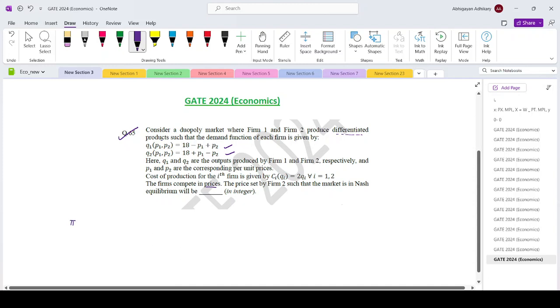So first let us write down the profit expressions. Pi 1 is P1Q1 minus C1, so P1 into Q1. So Q1 is 18 minus P1 plus P2 minus 2Q1, which is again 18 minus P1 plus P2. So that is P1 minus 2 into 18 minus P1 plus P2.